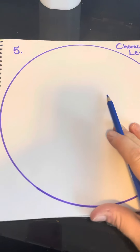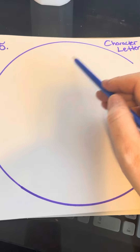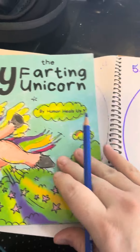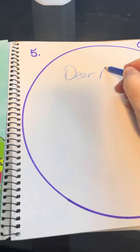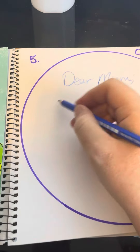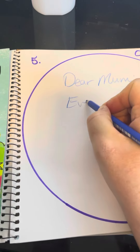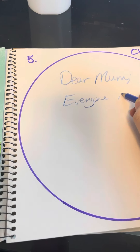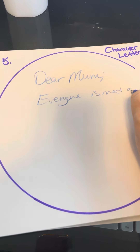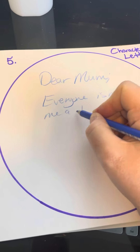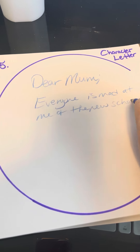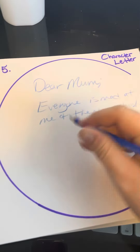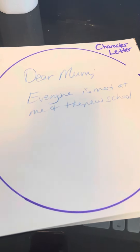For the character letter, initially these were letters from one character to another. The farting unicorn is going to be writing a letter home — it will be like 'Dear Mom' — she's British. Everyone is mad at me at the new school. You can do it online and post it in here if you have bad handwriting like me.